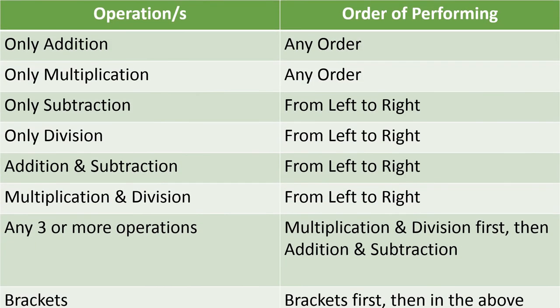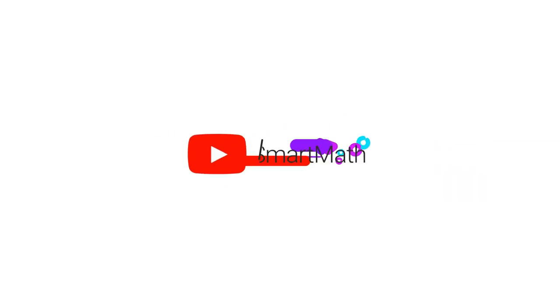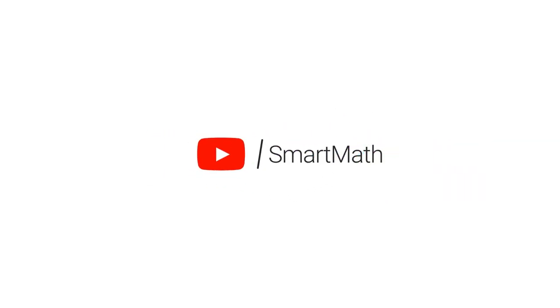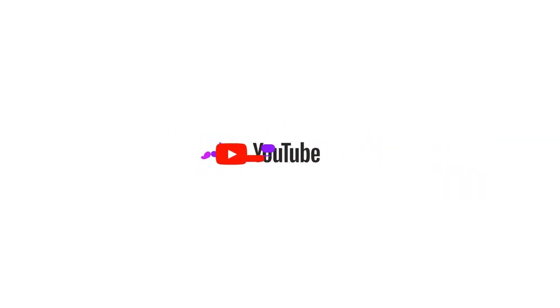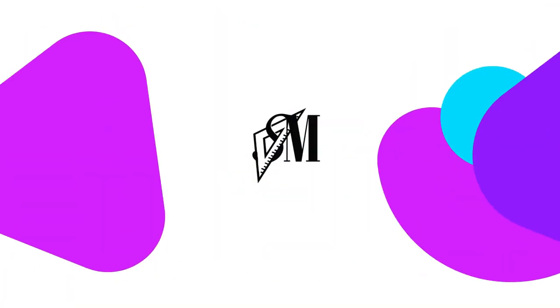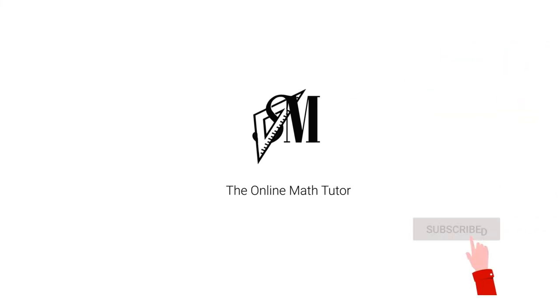So let us look into a summary. This table gives you a summary of the operations and the order of performing operations. Hope I made myself clear with operations on whole numbers. See you with another smart math clip. Until then, goodbye.